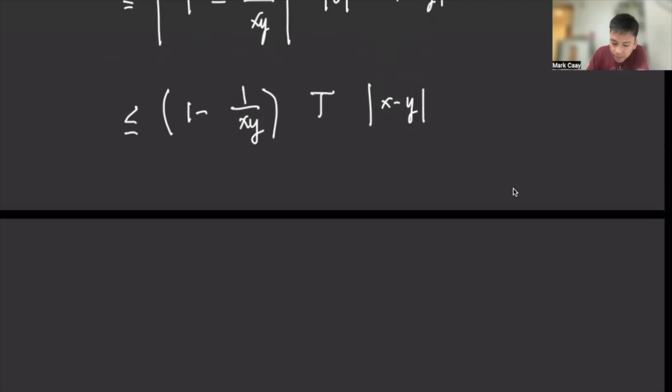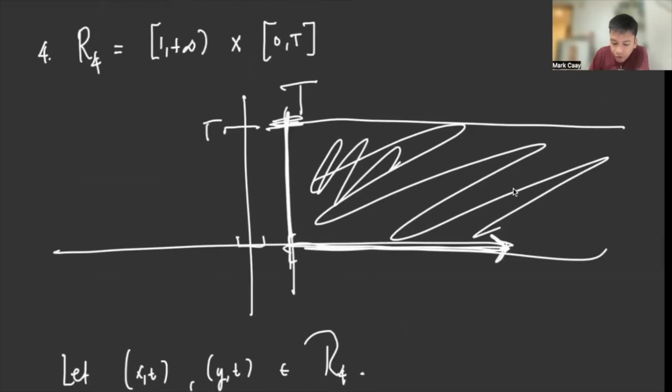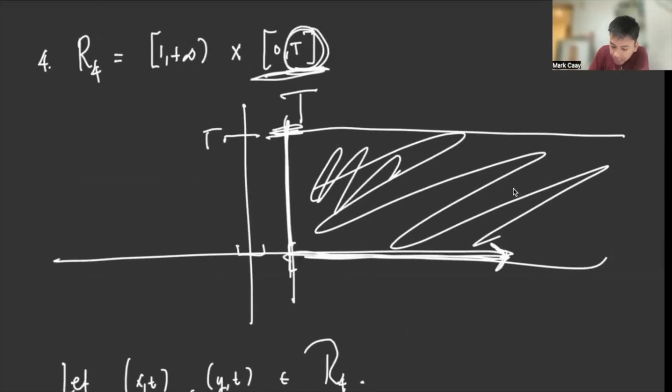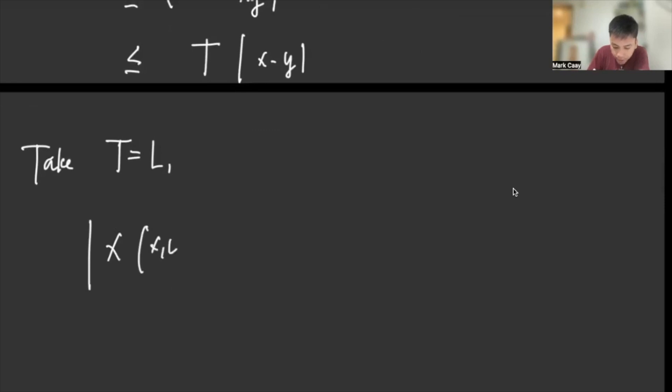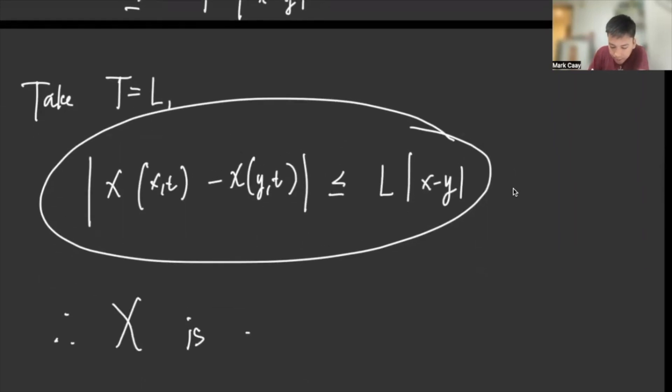And so this one is technically less than one. We know it's less than one because if you look, this is positive. So one minus this positive value will be smaller. So ibig sabihin, when I remove that, this becomes less than or equal to T times |x - y|. So our T here, it's the bound of our region. So since it's a bound of the region, it's a real number, so it's a constant. So therefore, if we take T equals L, we would have ||X(x,t) - X(y,t)|| ≤ L|x - y|. So diba, this is the form of the Lipschitz condition. So therefore, our X is a Lipschitz function on R4. That's it.